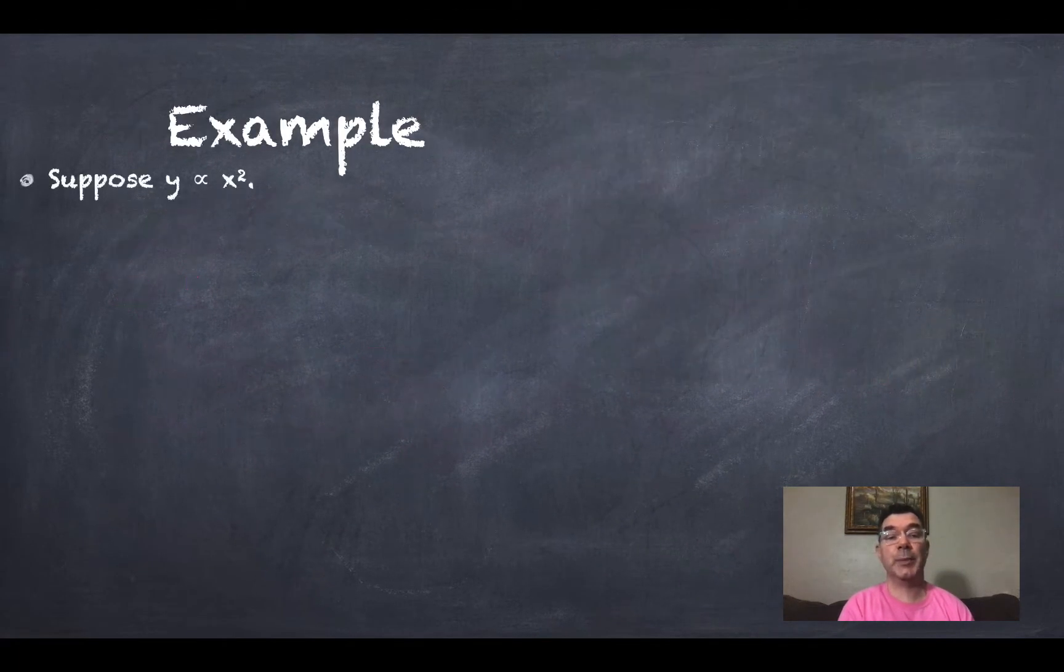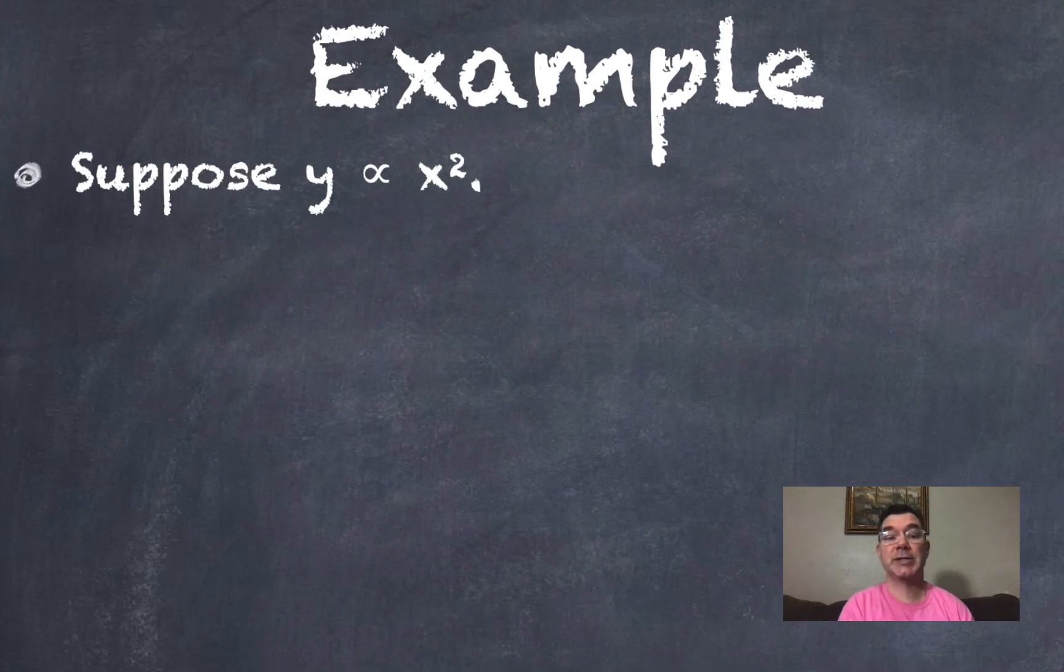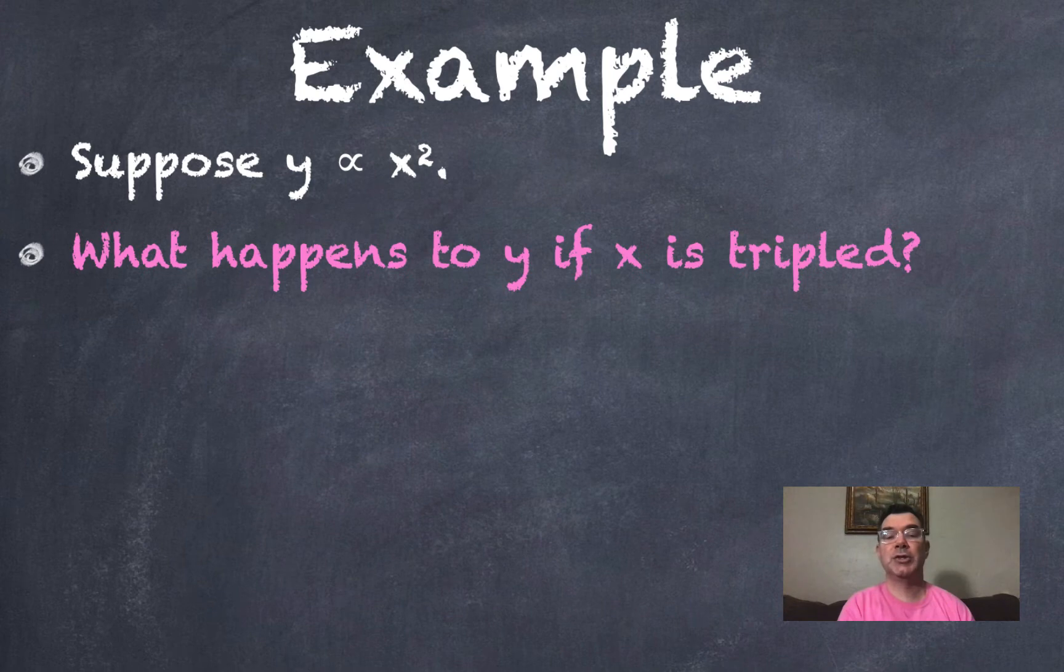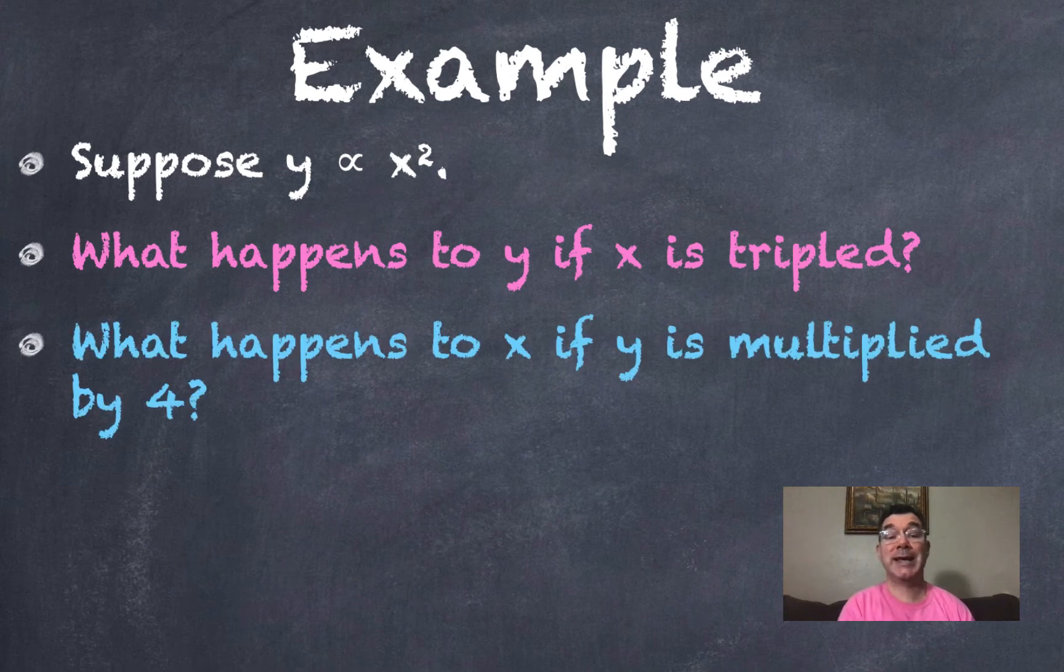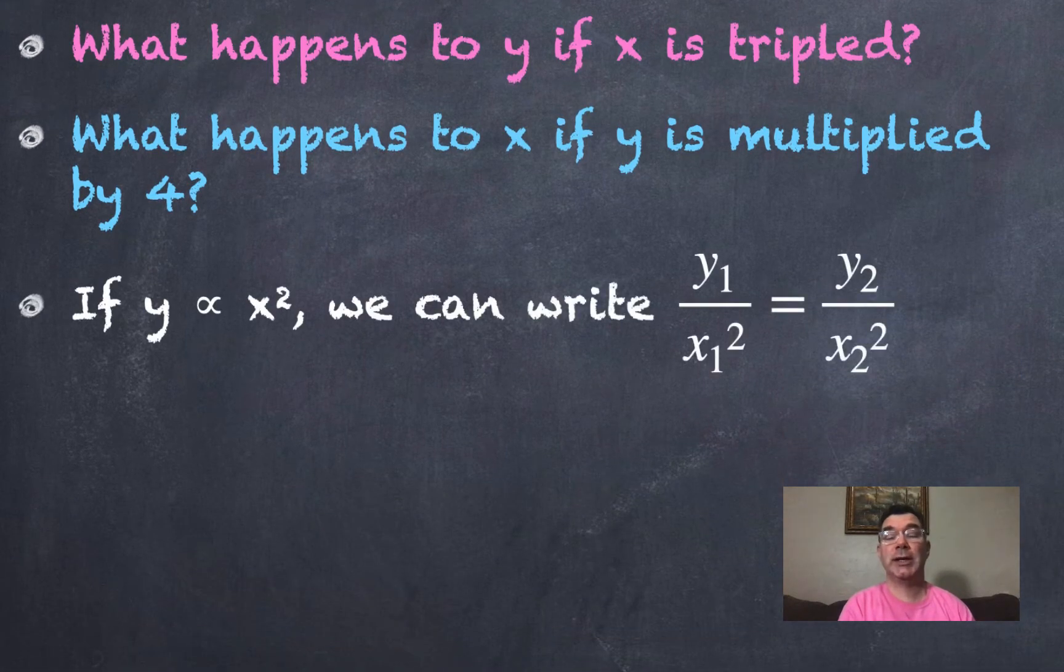So for example, let's suppose that I knew that y was proportional to x squared. What would happen to y if x was tripled? And what would happen to x if y was multiplied by 4? So I just want to talk about what would happen in those relationships.